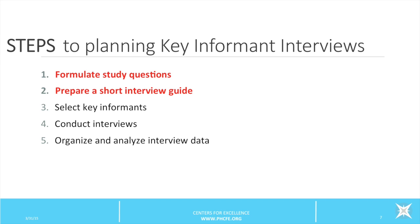The initial steps to planning key informant interviews are: Step 1 — formulate study questions. These relate to specific concerns of a study and should generally be limited to five or fewer. Step 2 — prepare a short interview guide. Key informant interviews do not use rigid questionnaires, which inhibit free discussion. The guide should list major topics and issues to be covered under each study question. Since the purpose is to explore a few issues in depth, guides are usually limited to 12 items.